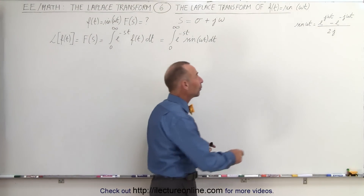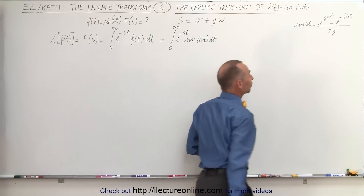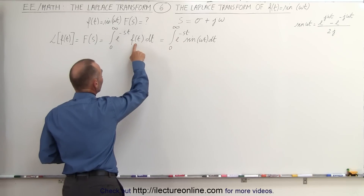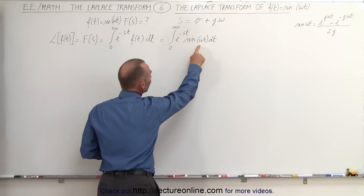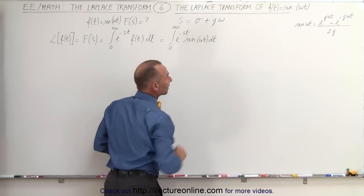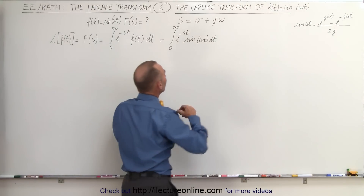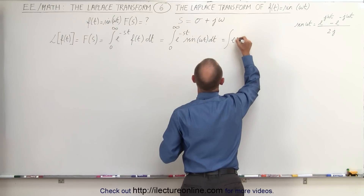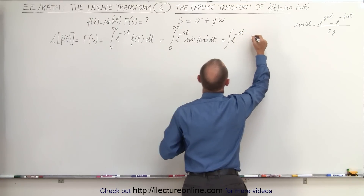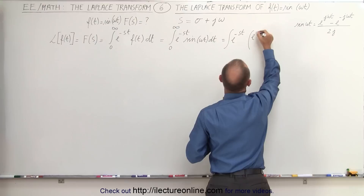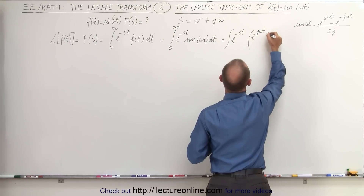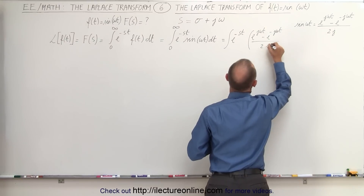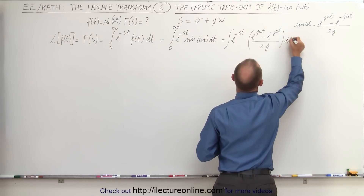We're going to remember that we can write the sine of omega t in its exponential form. So when we replace the function f of t by the sine of omega t, we replace it using its exponential form. This can now be written as the integral of e to the minus st times the quantity e to the j omega t minus e to the minus j omega t, all divided by 2j, times dt.